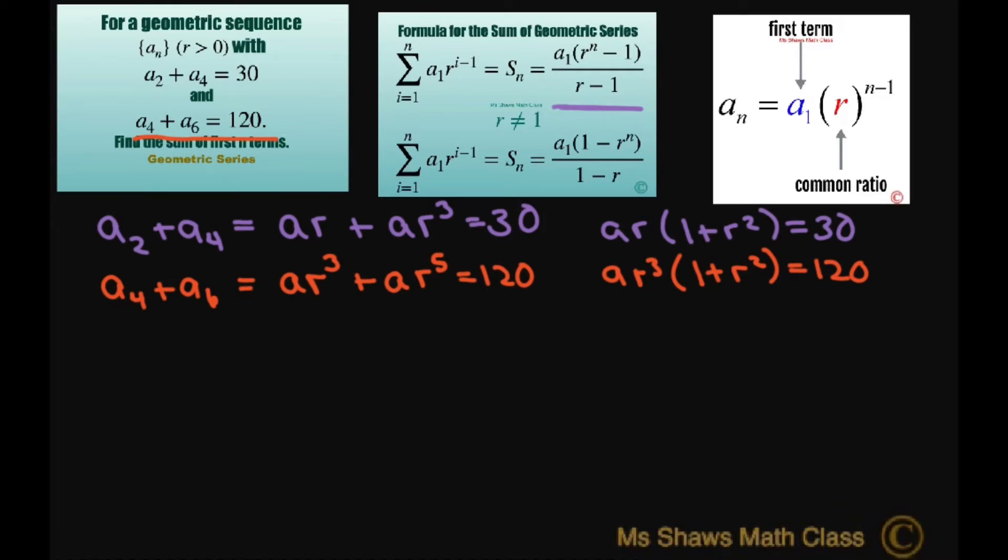Now let's call this equation equation 2, this one 1. So we're going to solve for R by taking equation 2 dividing it by equation 1. So that would be aR³ times 1 plus R² divided by aR times 1 plus R² equals 120 divided by 30.